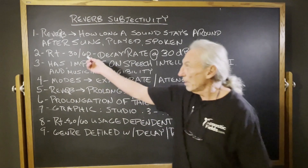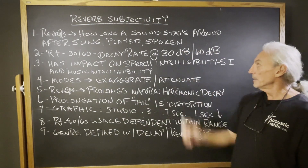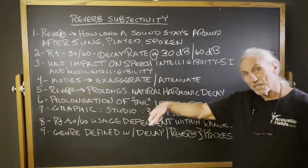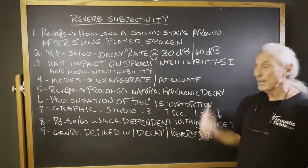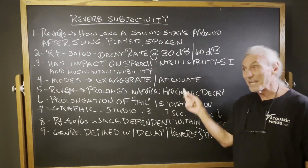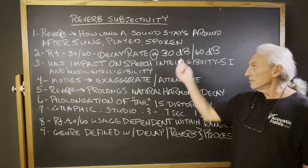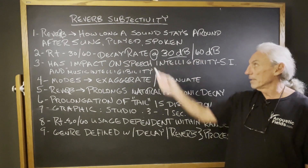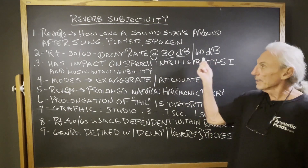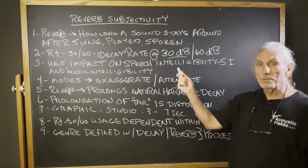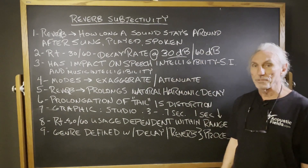How do we measure it? RT30, 60 decay rate — 30 dB, 60 dB — how much it decays, down 30 dB and 60 dB, and how long it takes for these two numbers to be hit. This is kind of a new one that people have looked at in the last five years. So what we do is measure how long the sound stays around in the room.